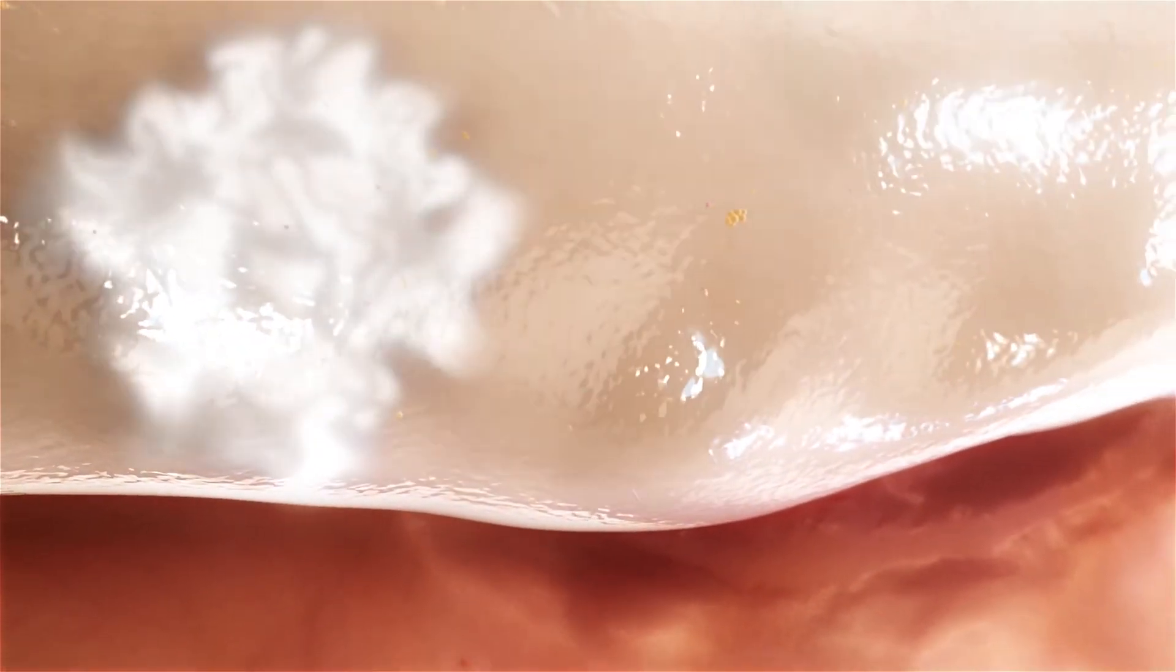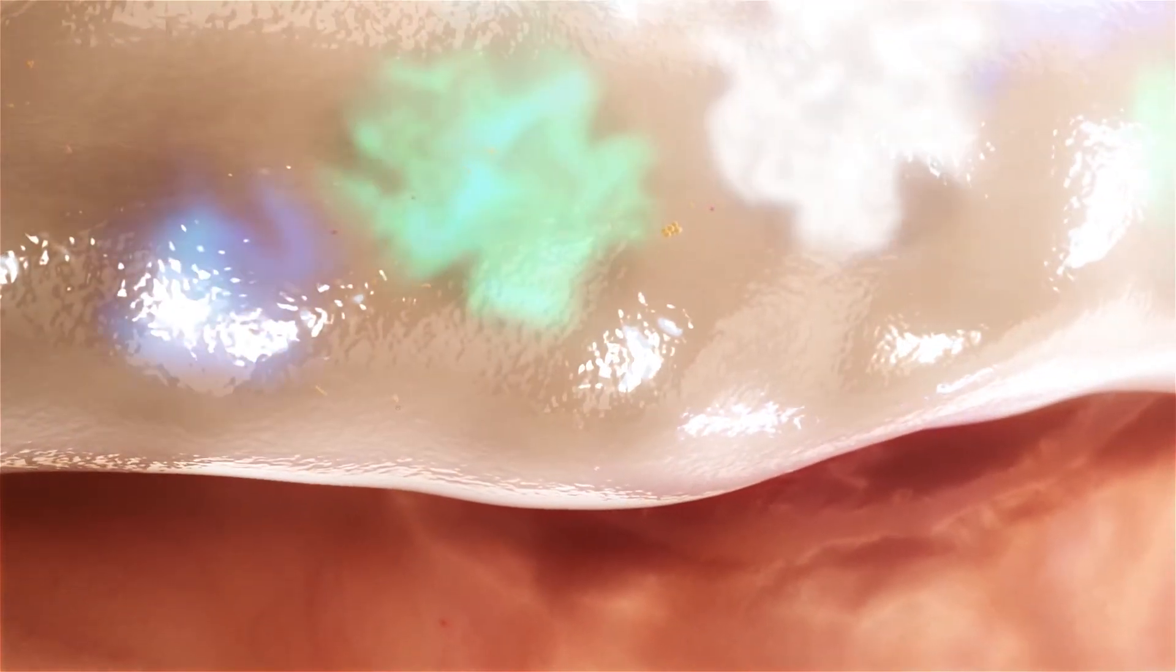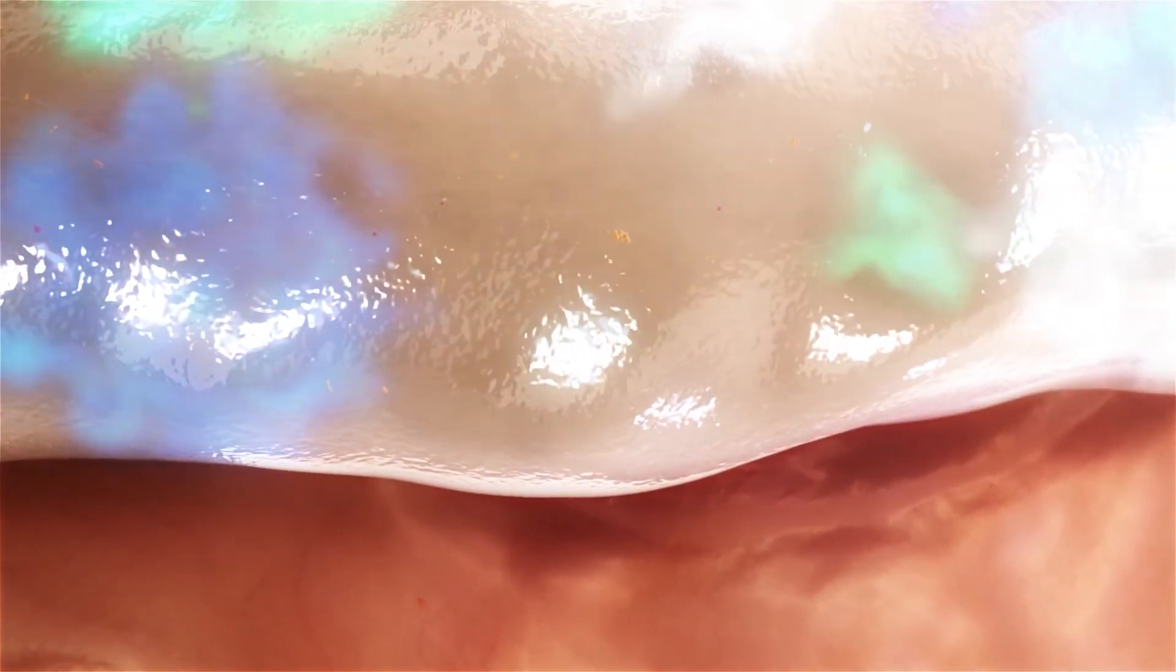Silver ions are only available when the dressing is gelled. This modulated action ensures a sustained level of silver to disrupt but also to prevent biofilm reformation.